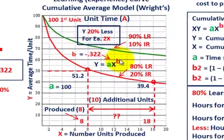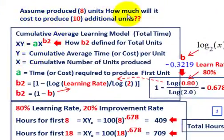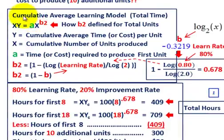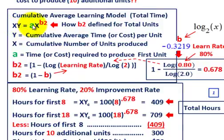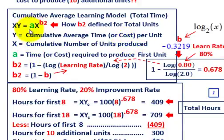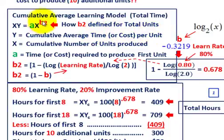We've produced 8 units. For the cumulative average learning model, total time equals X units times our per unit cost Y, which equals A times X raised to the power of B. Y is the cumulative average time per unit, X is the cumulative number of units produced, A is the time or cost to produce the first unit set at 100, and X raised to power B gives us cumulative average cost per unit.